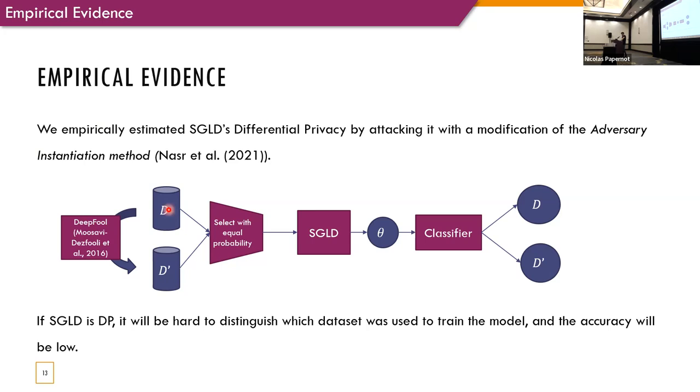So, this is how the attack looks. We take a data set, and using DeepFool, we create an adjacent data set. Then, we select one of the data sets with equal probability, and use SGLD to train a model on the selected data set. Lastly, we use a classifier to distinguish which data set was used to train the model. Now, intuitively, if SGLD is private, the accuracy of the classifier will be relatively low.